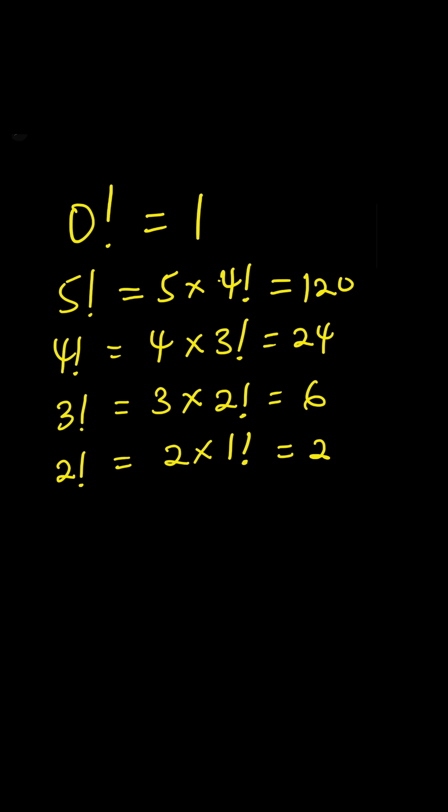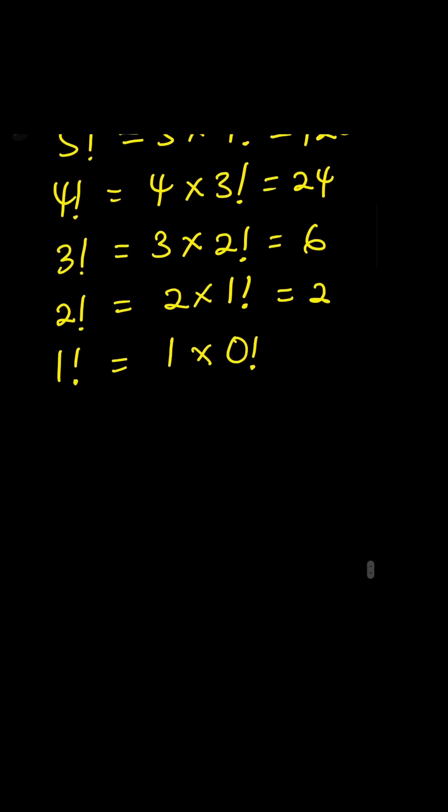Now one factorial is equal to one times zero factorial. So here's where the magic happens. We have one factorial is equal to one times zero factorial, right? But we're looking for what zero factorial is.